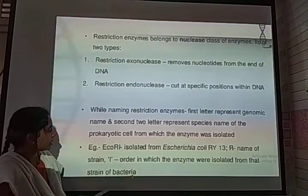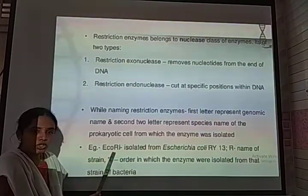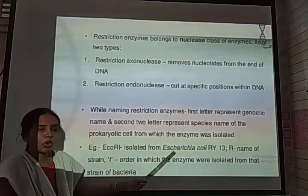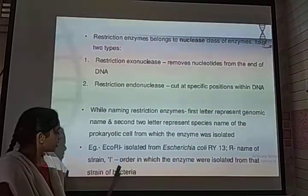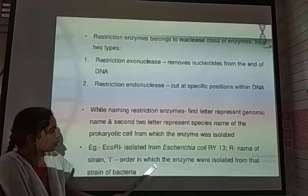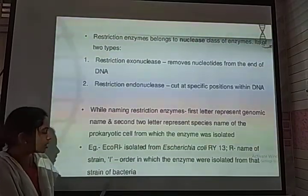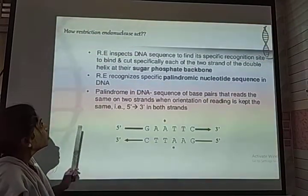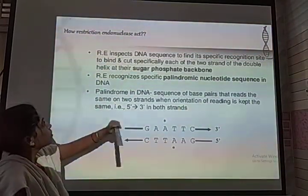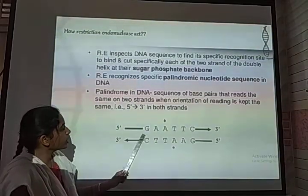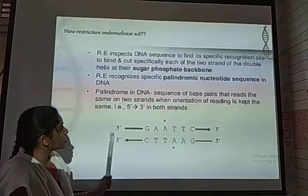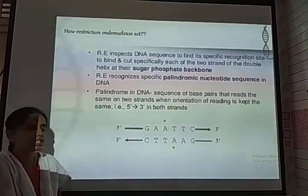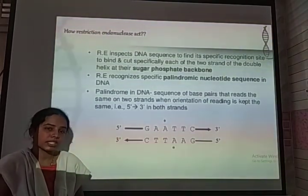Let us take EcoRI as an example of a restriction enzyme. It has been isolated from a microbe called Escherichia coli. The 'R' indicates the name of the strain, and 'I' indicates the order in which the enzyme was isolated from that strain of bacteria. The DNA composition consists of sugar and phosphate. When the nucleobase sequence is arranged from the 5' to 3' direction, the restriction enzyme does not recognize all sequences — it recognizes only a specific sequence.